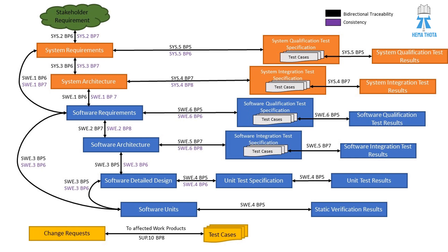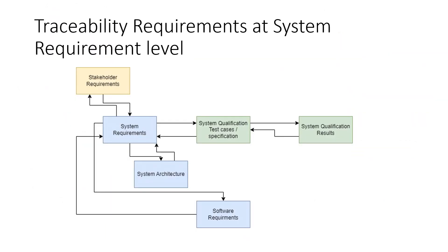The first thing here is stakeholder requirements. Stakeholder requirements are nothing but user requirements or customer requirements, which are in natural language — the English that you and I speak. These customer requirements in natural human language will be converted into system requirements after technical analysis. System requirements will be in technical terminology with a verification criteria, and there should always be a unique identification number.